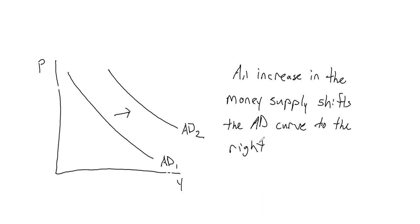We can see how monetary policy can play a really important role in the short run. As the Fed increases and decreases the total amount of money in the economy — changing the money supply — it changes aggregate demand pretty immediately. Increasing the money supply shifts the AD curve to the right and increases everybody's potential buying power. If the Fed wanted to cut back on aggregate demand, it could decrease the money supply and shift the aggregate demand curve back to the left. Monetary policy can play a really important role for aggregate demand in the short run.